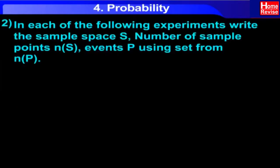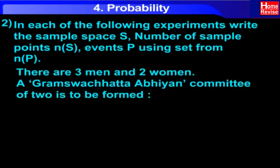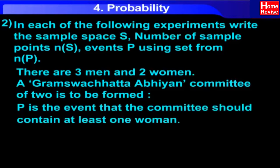In each of the following experiments, write the sample space S, number of sample points N(S), events P using set notation, and N(E). There are three men and two women. A Gram Swachhata Abhiyyan committee of two is to be formed. P is the event that the committee should contain at least one woman.